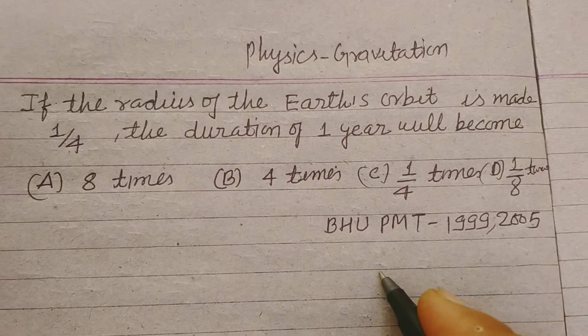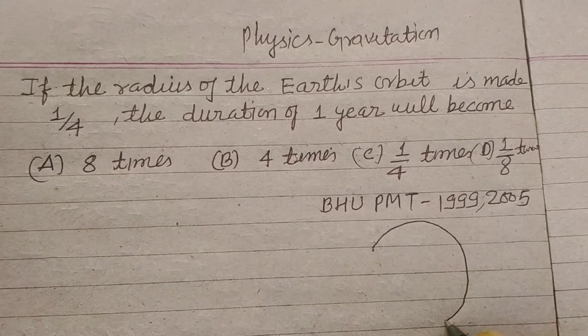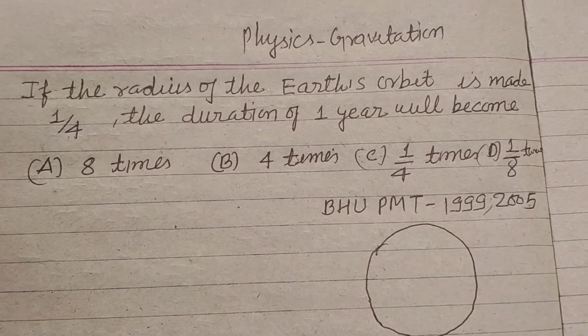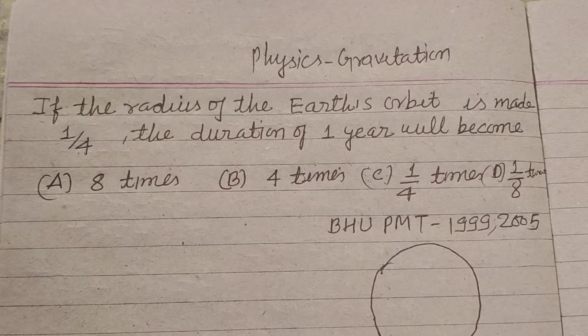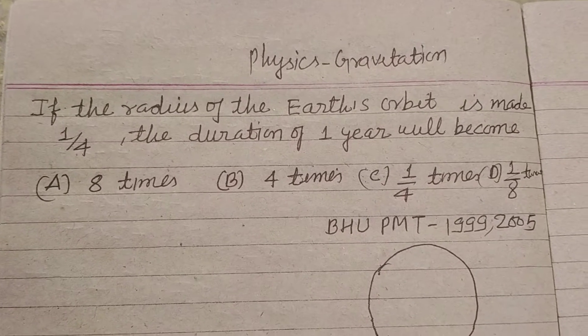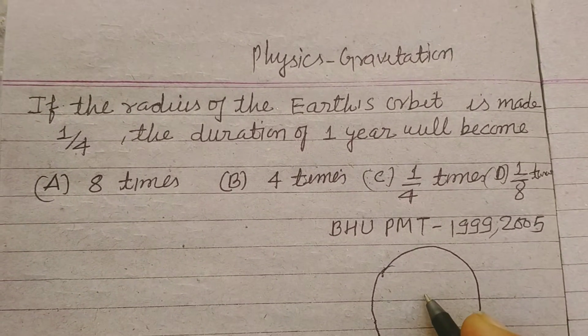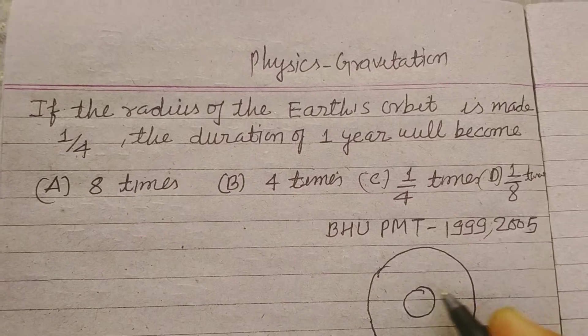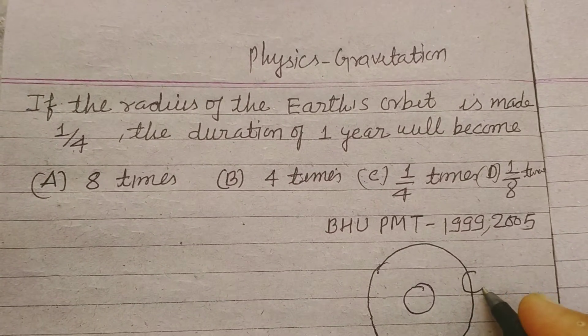So let this is earth. The radius of the earth's orbit, this is sun, and earth is revolving around the sun.